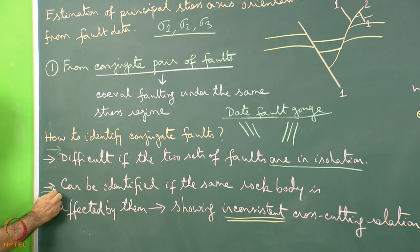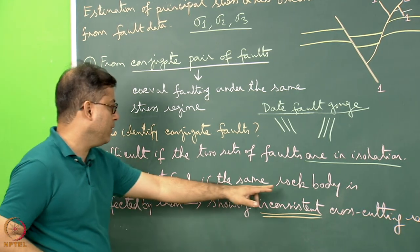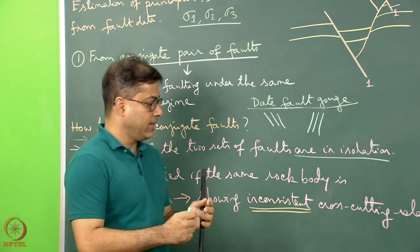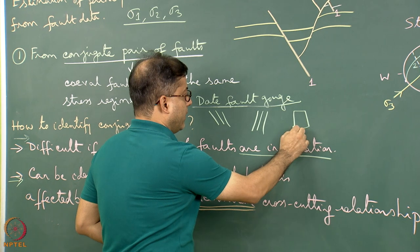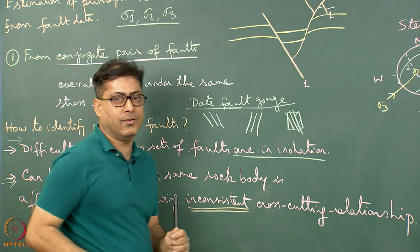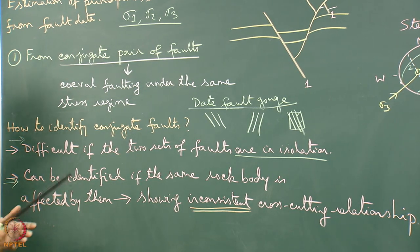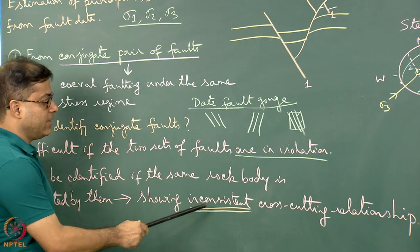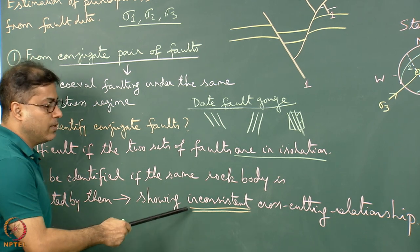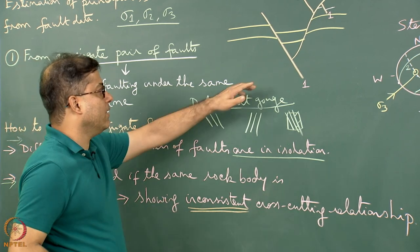The better case is where conjugate faults can be identified because the same rock body is affected by both. In this scenario, one set of faults and another set of faults both affect the same rock body, and if they formed simultaneously, there will be an inconsistent cross-cutting relationship between them.